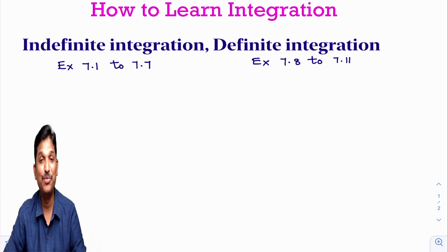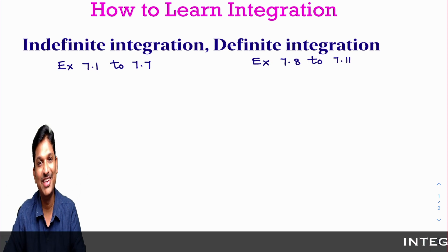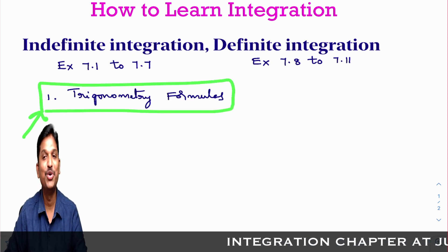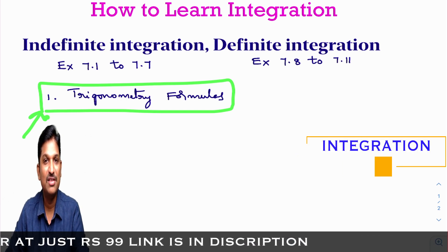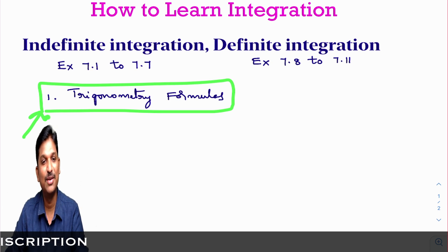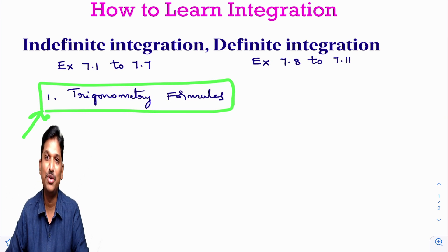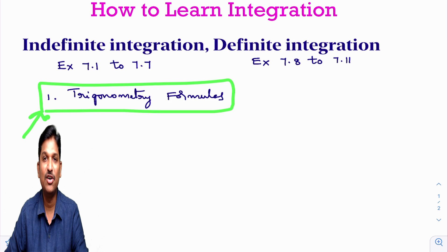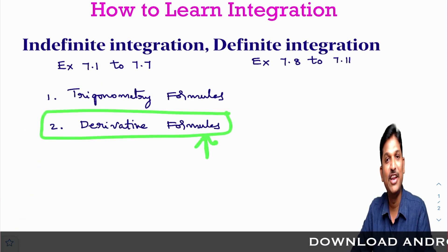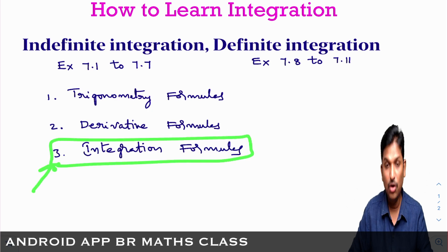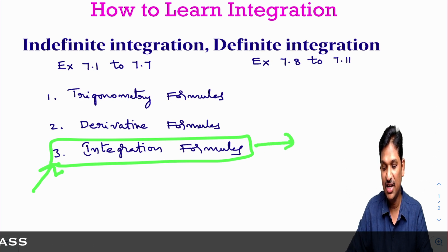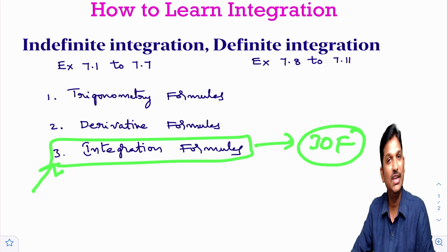Before going to learn this chapter, you must be good in three things. First, you need to know trigonometry formulas — at least basic ones like compound angle formulas: sin(A+B), cos(A+B), sin 2x, cos 2x, tan 2x. Second is derivative formulas, because integration is nothing but anti-differentiation. In the beginning of this chapter, you will learn around 15 to 16 formulas; in the complete chapter, around 30 formulas total.